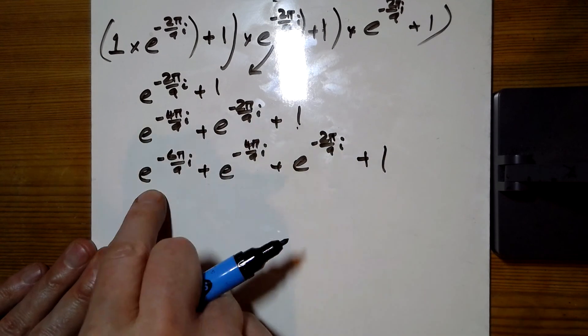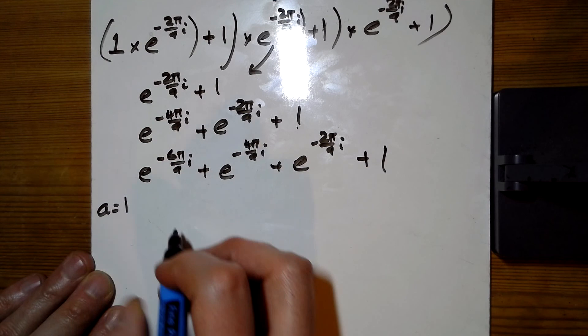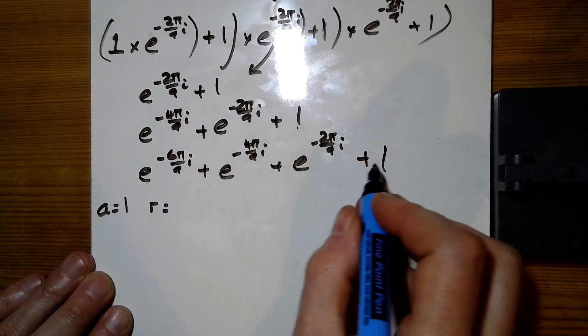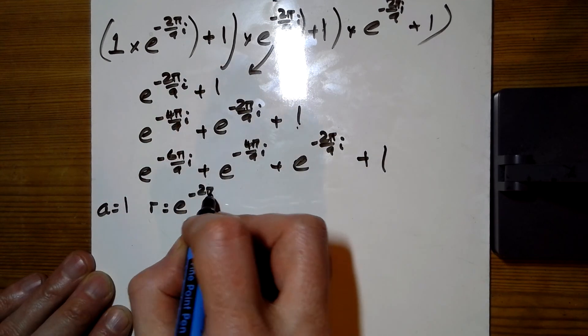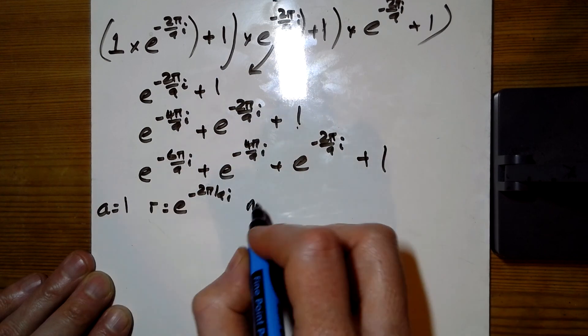Now look, this is just a geometric progression. I'm going to go that way there. So a is 1. Each time I'm timesing from there to there is e to the minus 2pi over 9i, and n is 1, 2, 3, 4. n is 4.